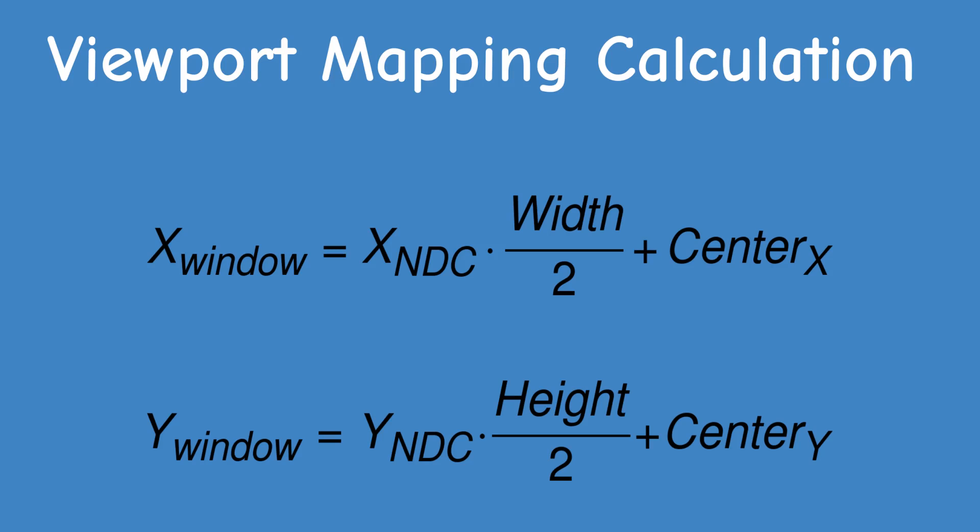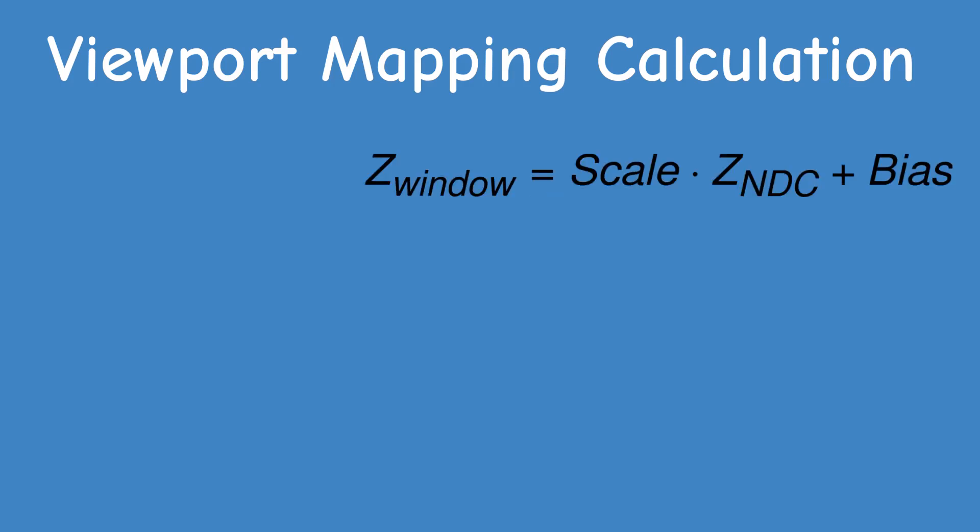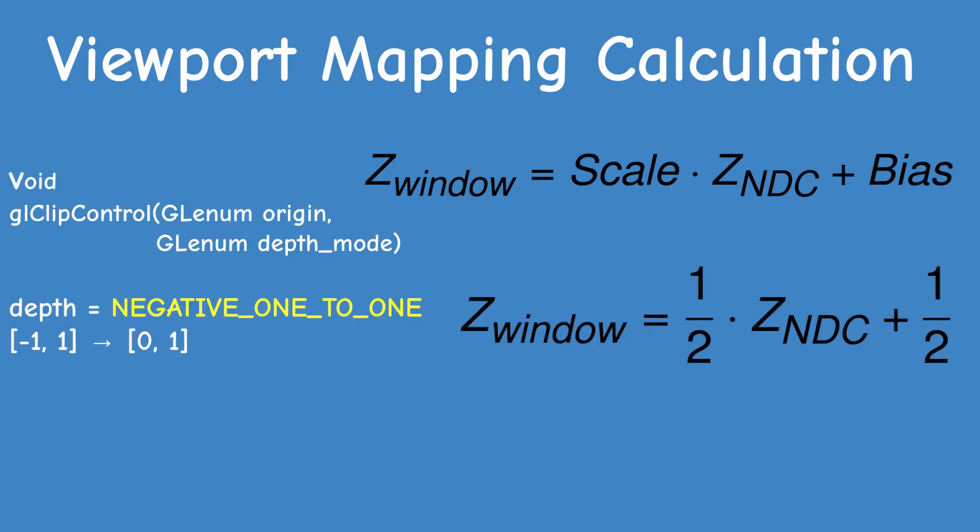Let's see the Z transformation, and once again we have a twist. We need to scale Z and add a bias. If you configure the depth mode to be negative 1 to 1, then the scaling factor and the bias are both a half. This maps the range minus 1 to 1 to 0 to 1. If the depth mode is 0 to 1, then the scaling factor is 1 and the bias is 0, so the range 0 to 1 remains 0 to 1.